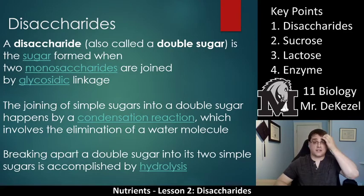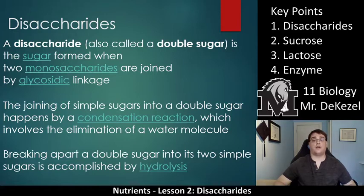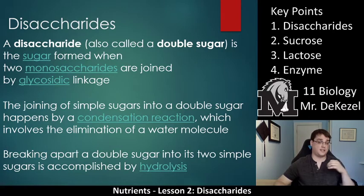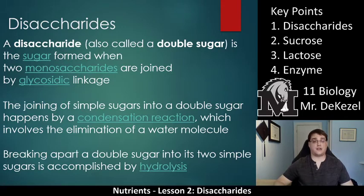Disaccharides are also called a double sugar. The sugar is formed when two monosaccharides are joined by what is called a glycosidic linkage — that would be a term to take note of, as it may be new. It is what joins two monosaccharides. The joining of simple sugars into a double sugar happens by a condensation reaction, which involves the elimination of a water molecule.